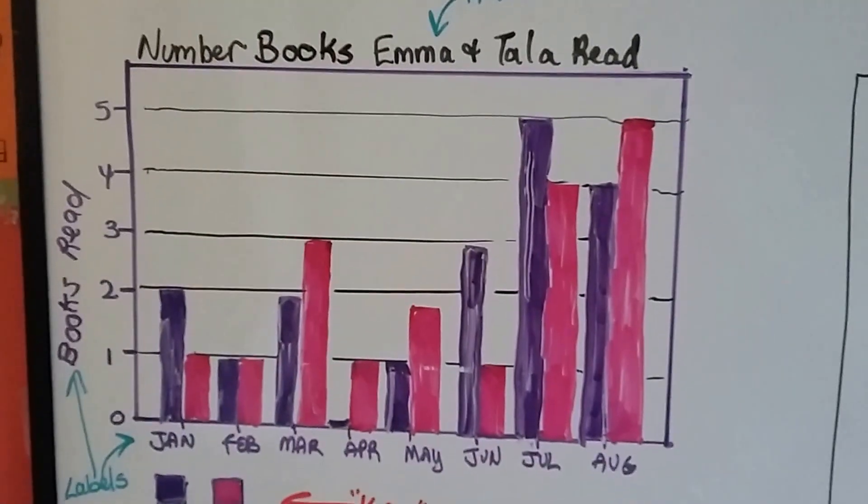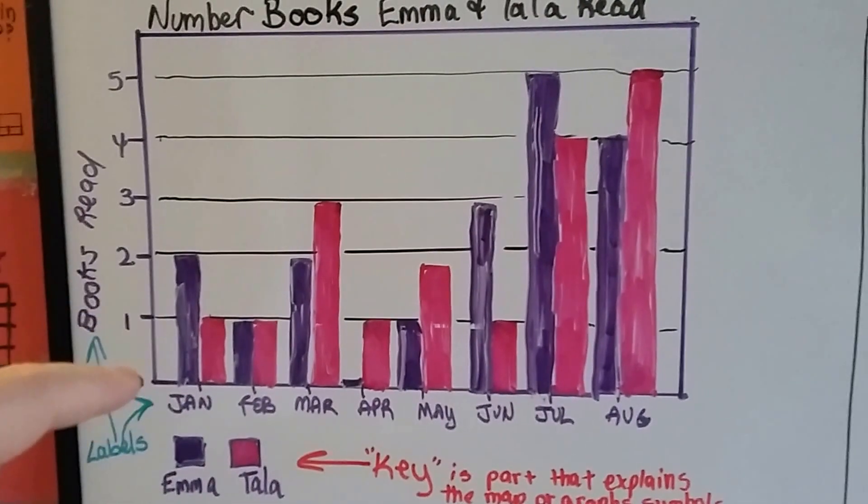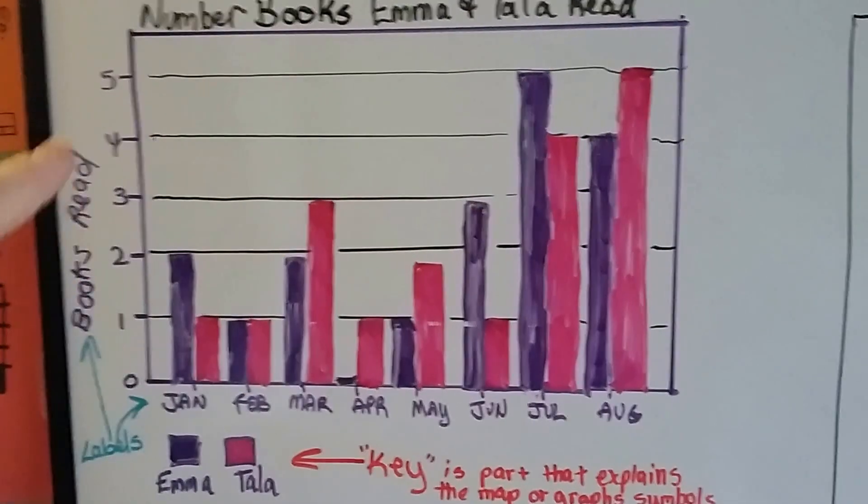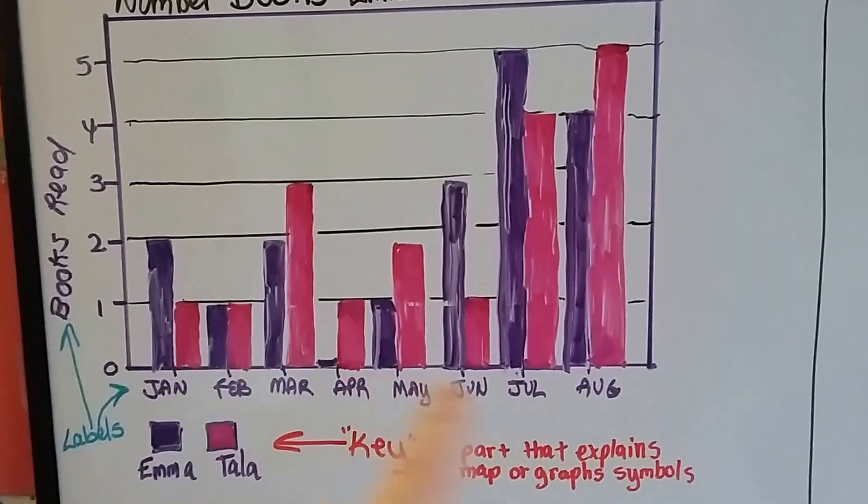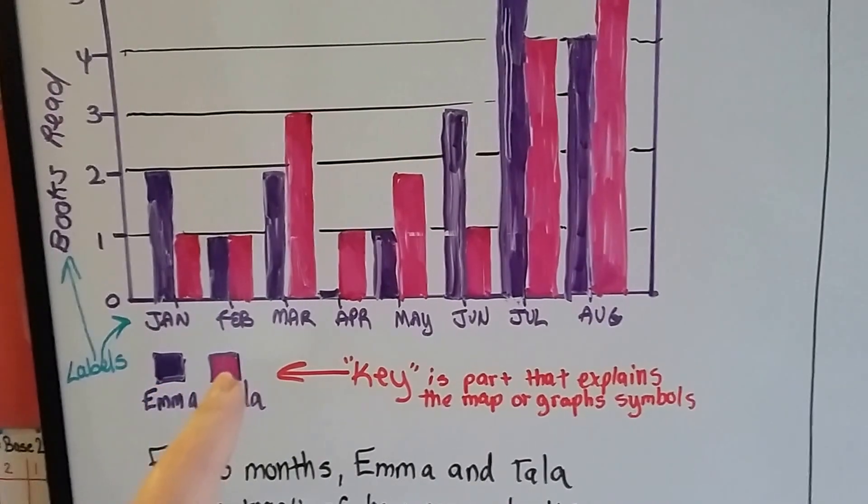So here's the title: Number of books Emma and Tala read. The label is over here. It's from zero to five because the most they read was five. They labeled it 'books read' and then put the months here. Here's the key so we know that purple is Emma and pink is Tala.